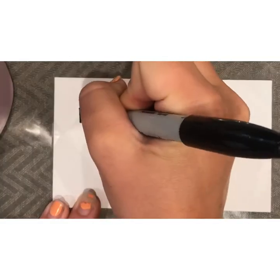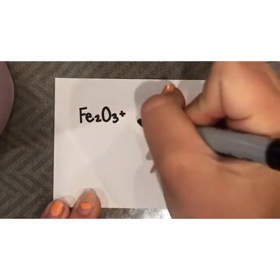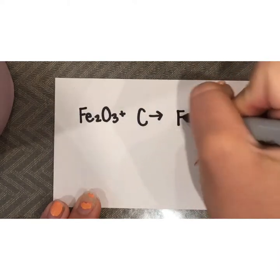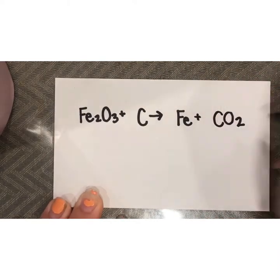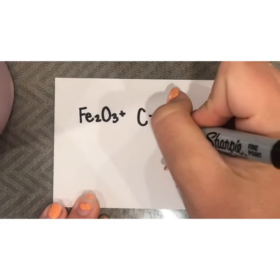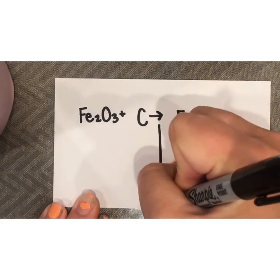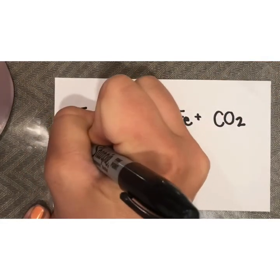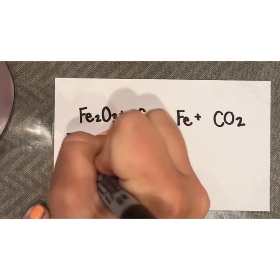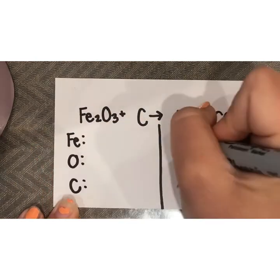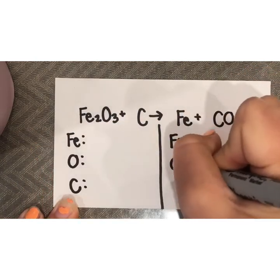Let's try a harder one. We'll do Fe2O3 plus C to make Fe plus CO2. We start by drawing a line down the center and then write out which atoms are on which sides. To make it easier to read, I put the same elements in the same line.